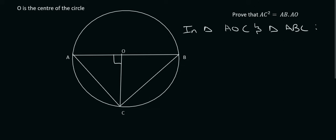So what we can start off with is, in both of those triangles, they both share this angle over here. So we can say that angle A is equal to angle A, and that is common.